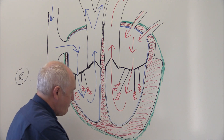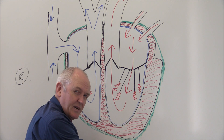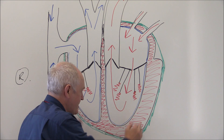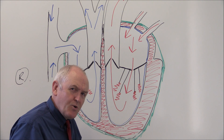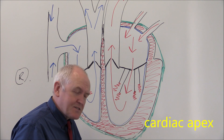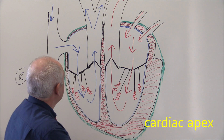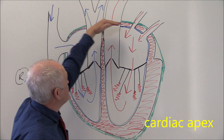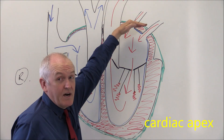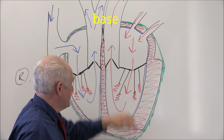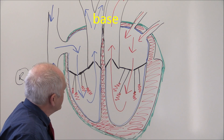This bit of the heart at the bottom, where it goes a bit pointed - confusingly, that's called the apex. So the apex is at the bottom, and this bit here is the base of the heart. The base is flatter and the apex is more pointed.